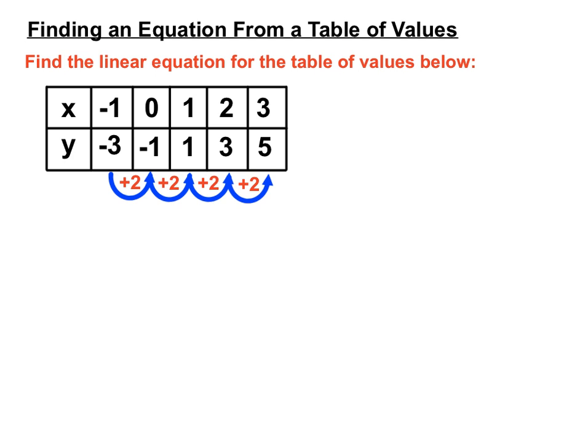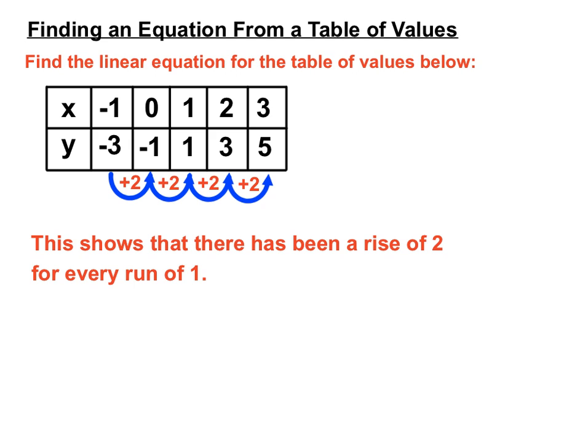So that helps us to piece together that there's been a rise of two. A change in the Y value is really a rise. So a rise of two every time there's been a run of one. Gradient is rise over run and so we've had a rise of two for every run of one. So just from the difference in the Y values, we can conclude that the gradient for this particular linear equation is two.